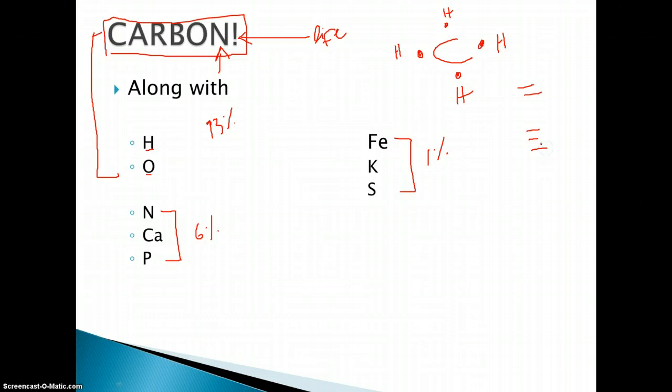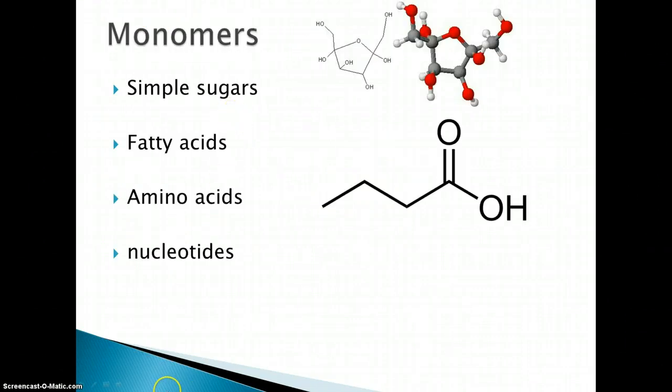So now we go to these things called monomers. What monomers are, are just simple structures made out of carbon, hydrogen, oxygen, and just the basic elements that we discussed. And they're just simple structures that create larger molecules.